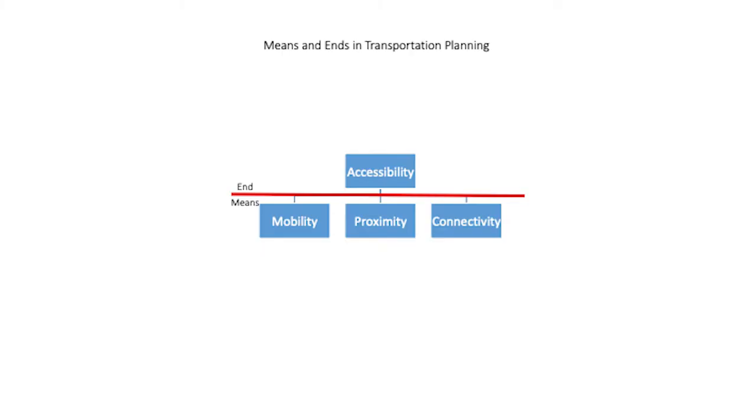We can also interact with things while they come to us. Data comes to us, software comes to us, information comes to us. Even things like Amazon packages and drinking water come to us — that's connectivity. Those three things together make up accessibility. What we call the accessibility shift is a shift in transportation and land use planning from the view that mobility is an end in itself to the understanding that accessibility is the end and mobility is only one means to that end.